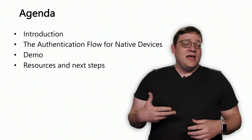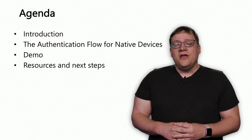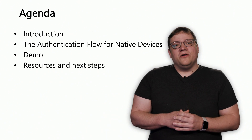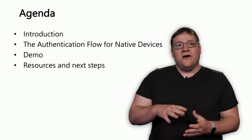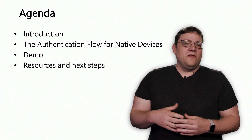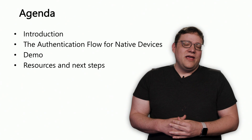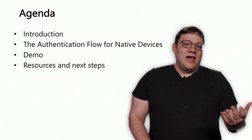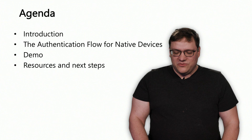There are a few things now that we've switched to a different model that uses the system browser that you might want to be aware of. We're also going to talk about the steps you would take in authenticating a user and then calling the Microsoft Graph, some gotchas to watch for inside the code, and then we'll jump into a demo, and after that I'll show you how to look up these resources yourself.